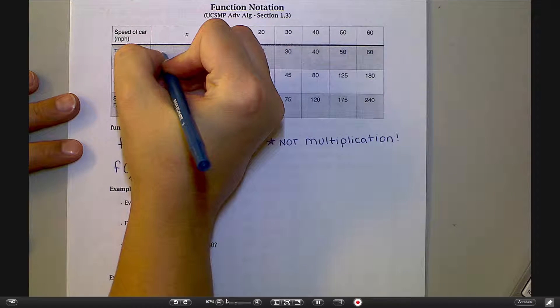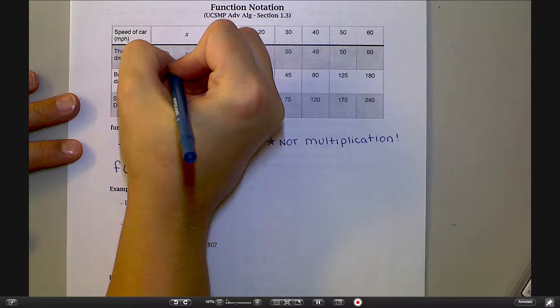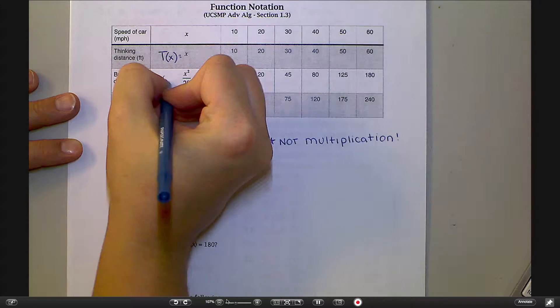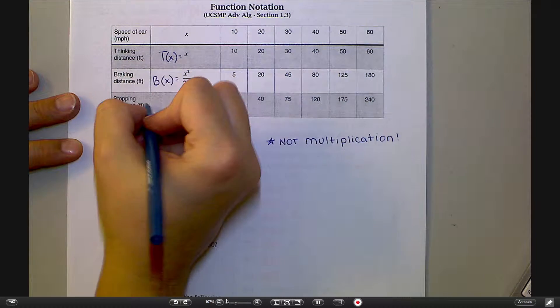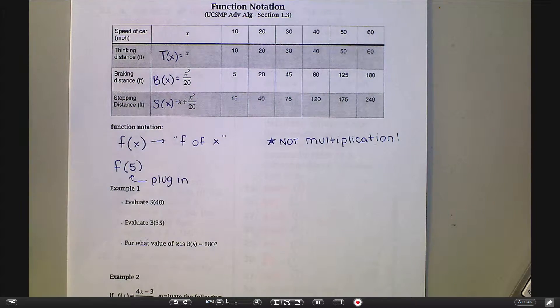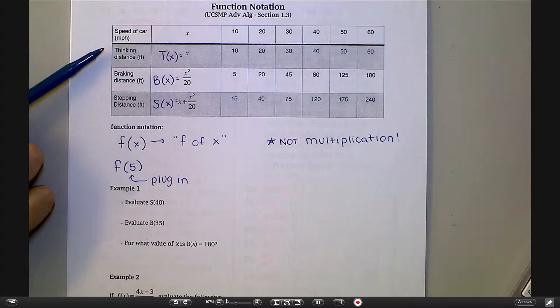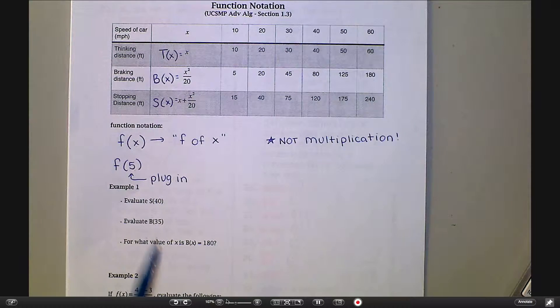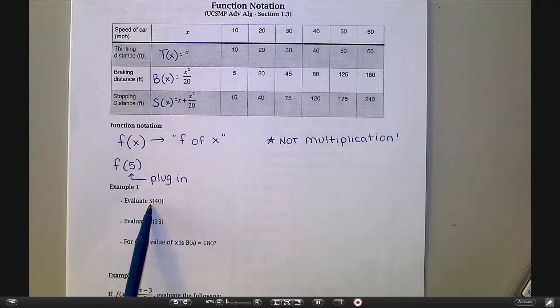Before we hit Example 1, I'm going to take up here in the table. My thinking distance I'm going to call t of x, my braking distance I'm going to call b of x because I'm not creative at all, and my stopping distance I'm going to call s of x. So I'm just naming those functions. When I say t of something, I'm talking about thinking distance. When I say b of something, I'm talking about braking distance.